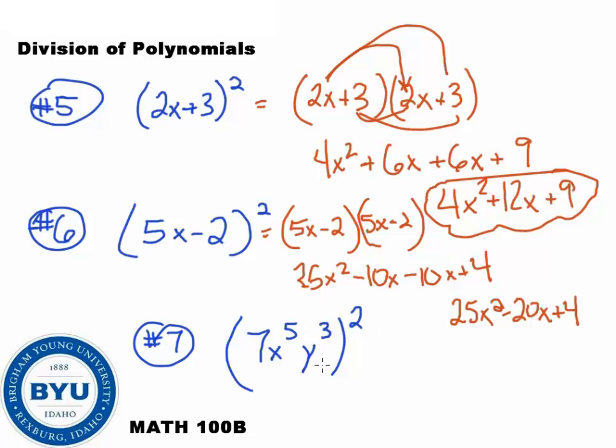Then for this one here, there is no need to write it out twice. We're just going to multiply everything. We can just multiply the 2 in and I get 49x to the 10th, y to the 6th.